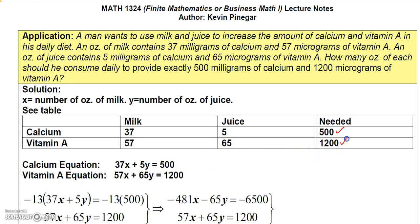For vitamin A, we need 1200 micrograms. Each ounce of milk gives 57 units of vitamin A and each ounce of juice gives 65 units of vitamin A. So 57X plus 65Y equals 1200.